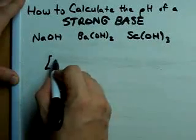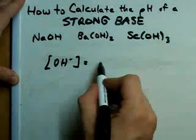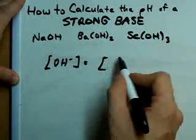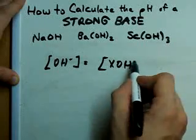The concentration of OH minus in your solution is simply the same as the concentration of your strong base, which I don't know what I'm going to call it here. I'll call it XOH because I don't know what X is.